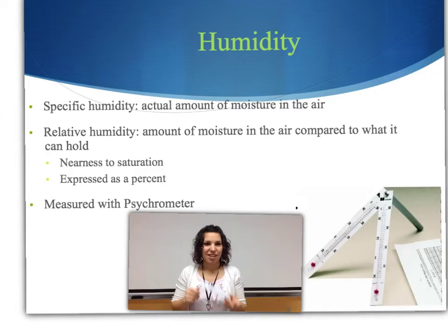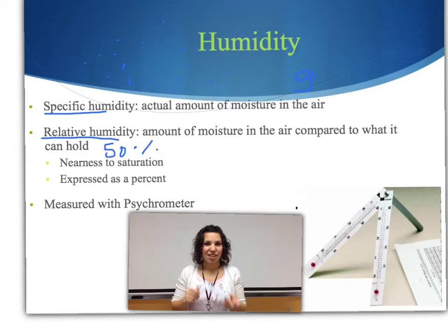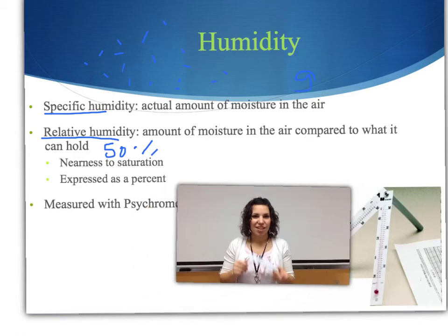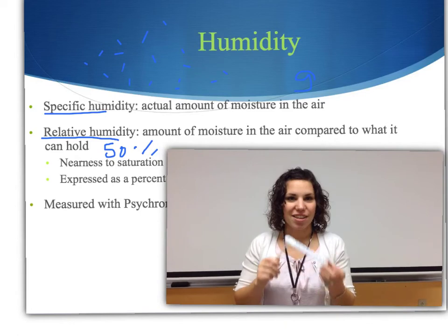Humidity is water vapor in the air — water in its gas state. Two humidity measurements are specific humidity, which is the actual amount of moisture in the air in grams, and relative humidity, which is the amount of moisture in the air compared to what it can hold, expressed as a percent. Relative humidity is measured using a sling psychrometer, which has two thermometers attached so you can spin it around.